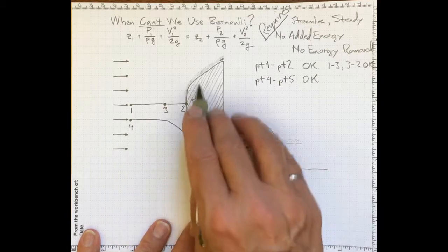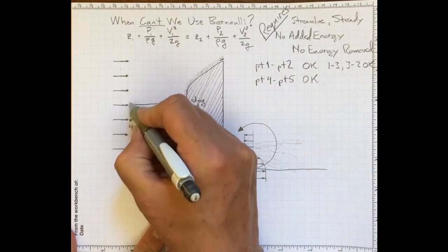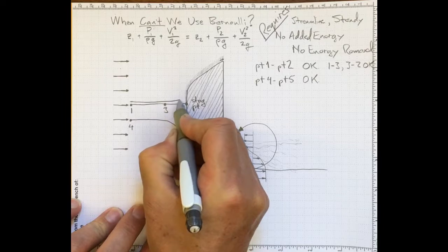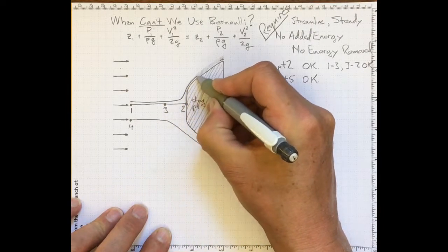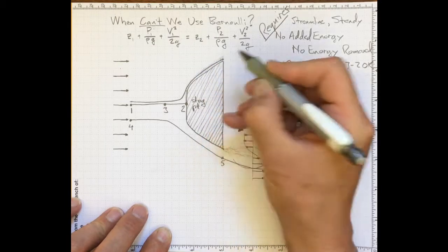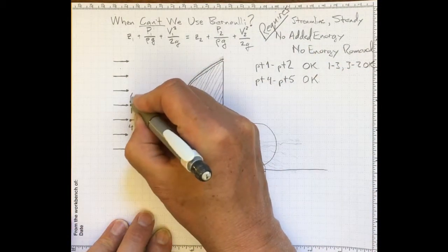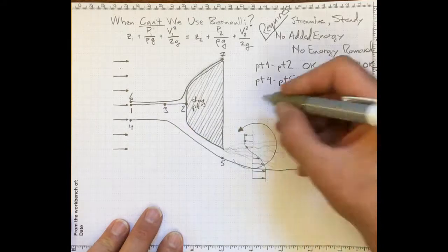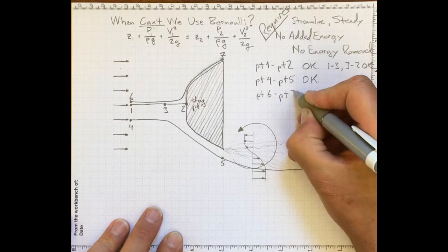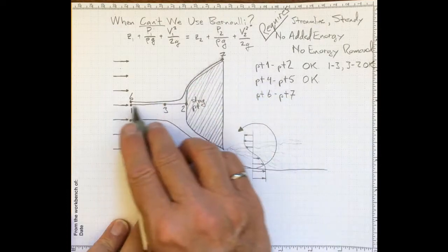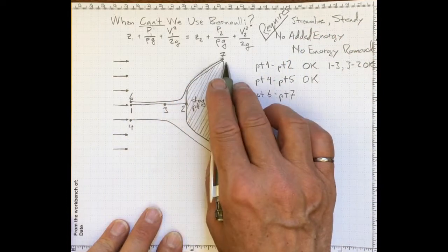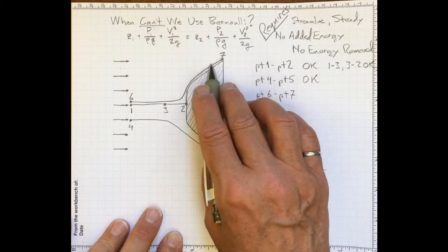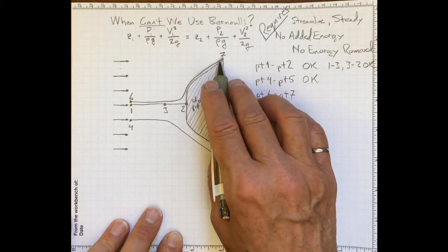How about another streamline, one that's very close to this first streamline, and goes into the body something like this, slows down, and accelerates around the outside here, and then carries on through the boundary layer like that. We'll call this point six, and that point seven. Can we apply Bernoulli's equation from point six to point seven? It's along a streamline, it's still a steady flow, there's no added energy, but there is energy removed by friction once we get into the boundary layer here. We're taking energy out, and the flow is slowing down because of it.